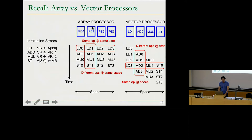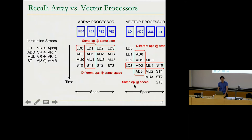In the vector processor, we execute different operations at the same time. For example, in one particular cycle we have load, add, multiply, and store executing simultaneously. The vector functional units are specialized—for example, this vector add unit always executes add operations. That is why we say it is the same operation in the same space.